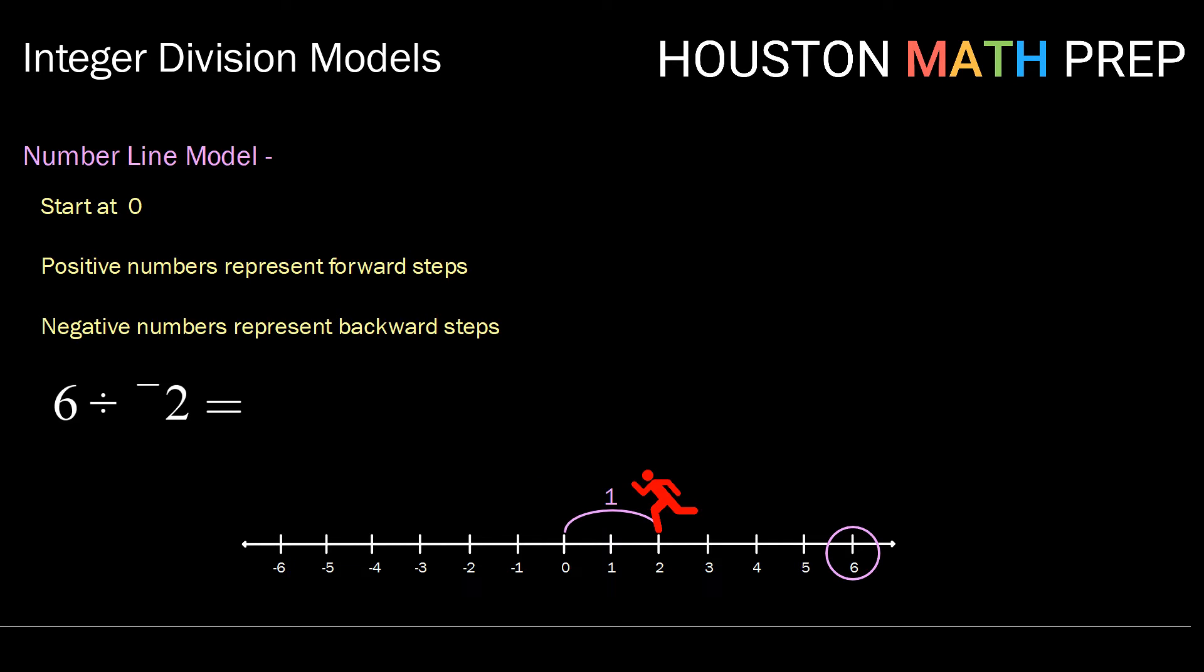Now if I take steps of size two that are backward, I'm going to count up how many steps did I take, and I'm going to note what direction my little creature is facing in the end. Here I took three steps and my creature, in this case my little running man, is facing the negative direction. So my answer is negative three.